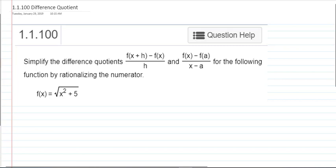Difference quotients are really just formulas for slope written in function notation. But in this problem, we're not really asked about the meaning of the difference quotient. We're just asked to simplify it.